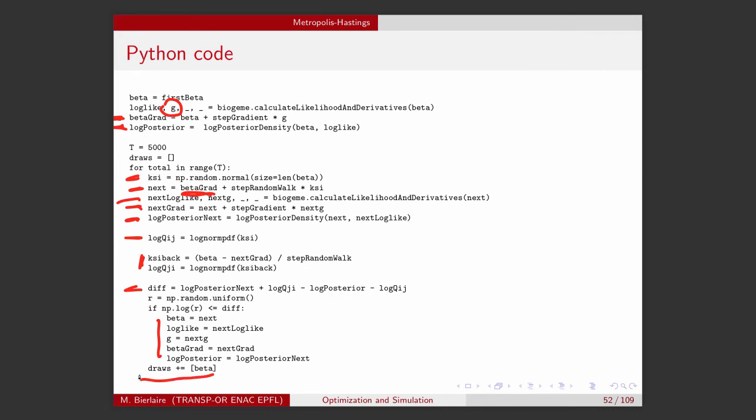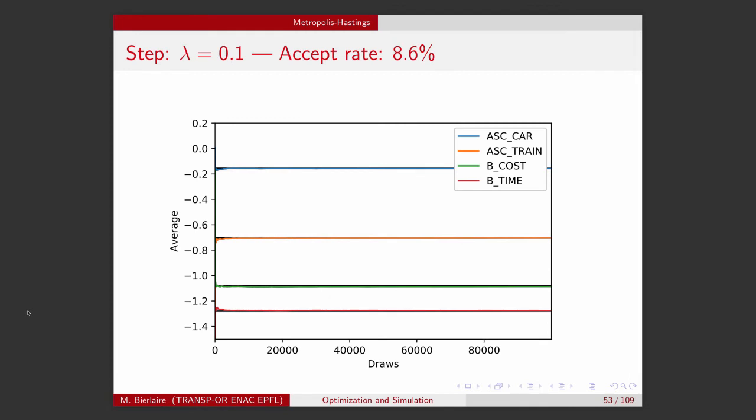And in any case, I put beta in the set of draws. That's again very simple to code. So this is the results with the lambda equals 0.1. Lambda is the step along the random walk. And here I have an accept rate of 8.6%.